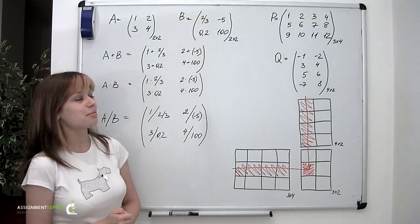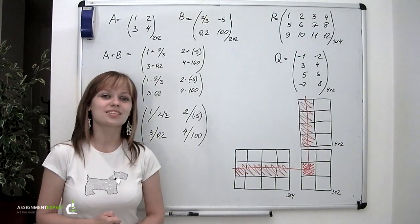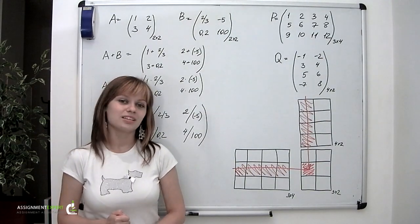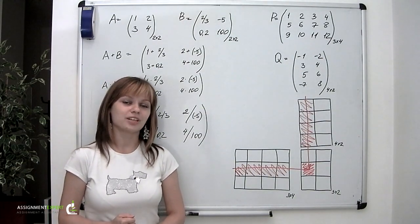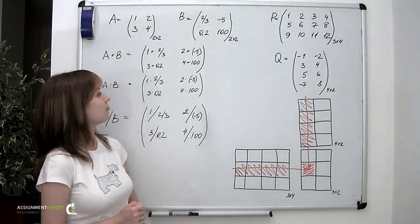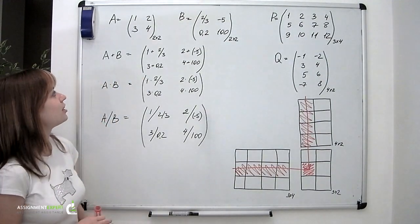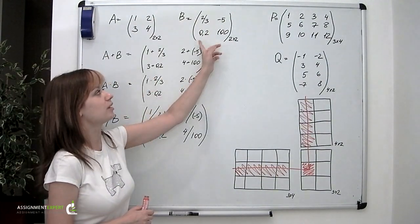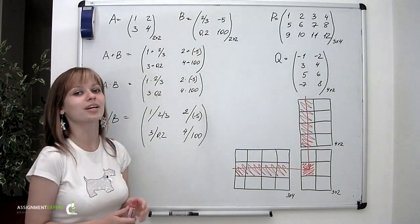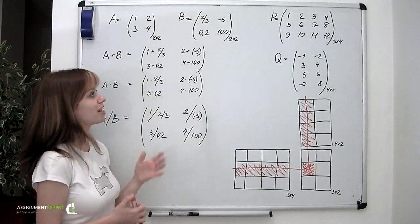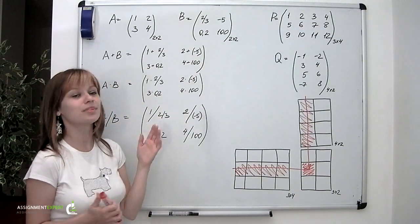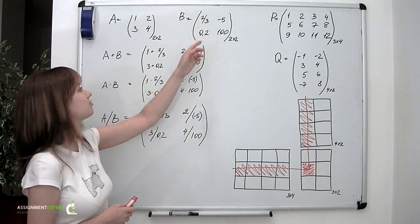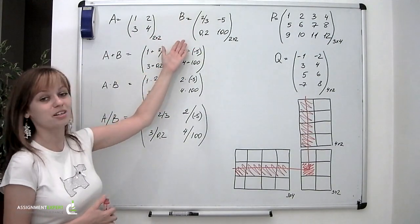Now basically, a matrix is just a table with numbers lying in its cells. These numbers are called elements or entries. So if we put the numbers into table form and then put them into brackets, we would have matrices, just as A and B written on our board. A and B are matrices.